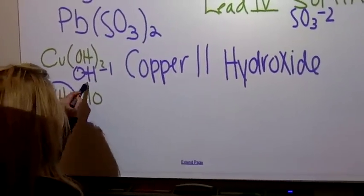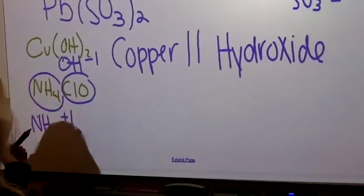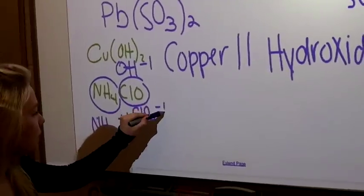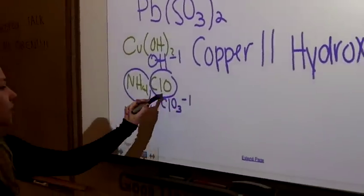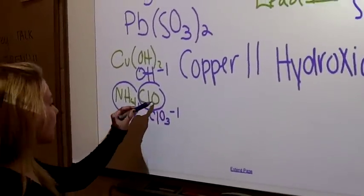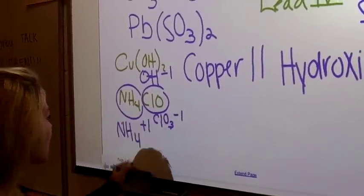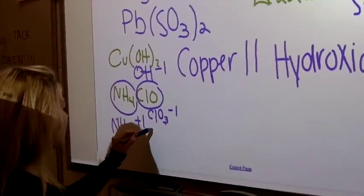Then this ClO – well, chlorate is ClO3^-. These charges are already the same, but you don't have three oxygens, you only have one. So it would be hypo.